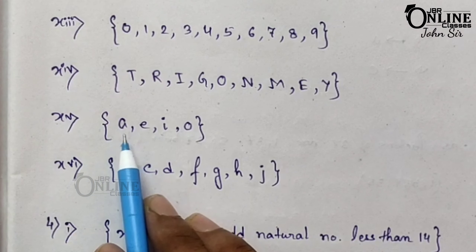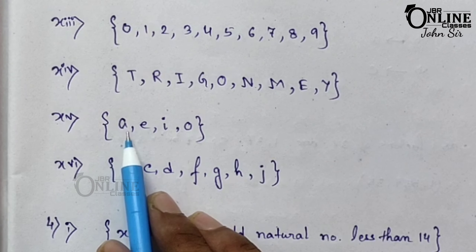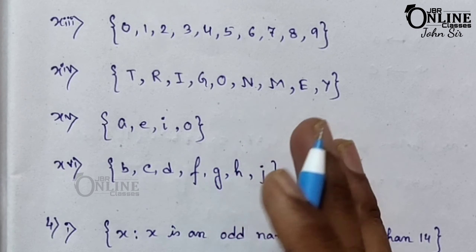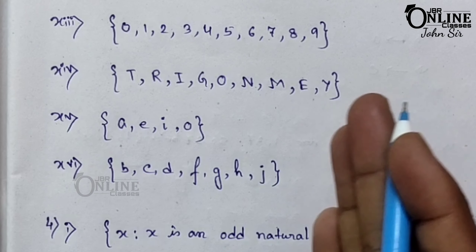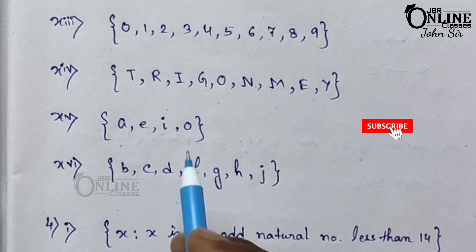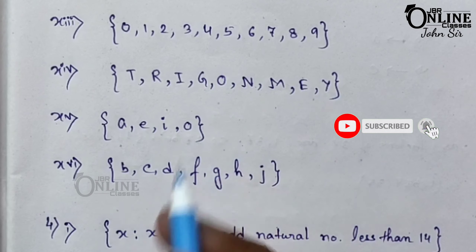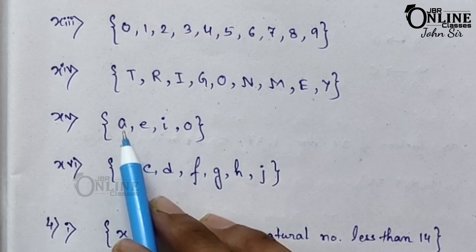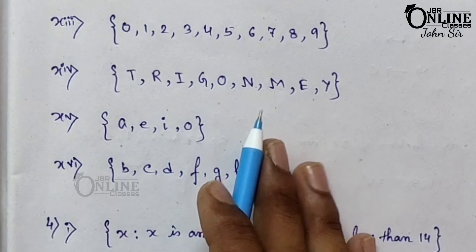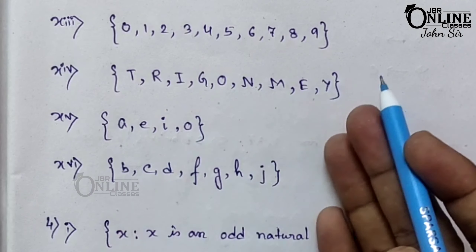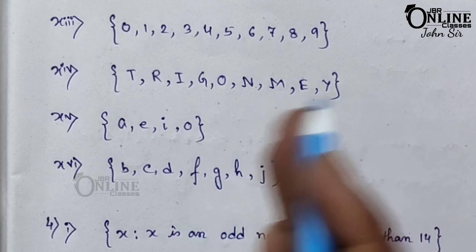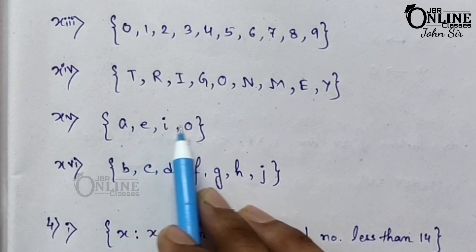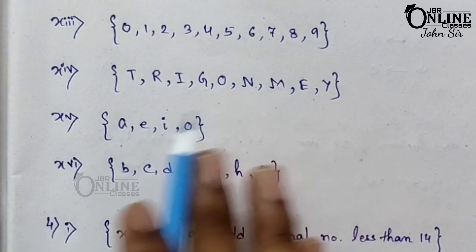XV: the set of all vowels in the English alphabet which precede Q. 'Precede Q' means the alphabets that come before Q. You have to write only the vowels. Vowels are A, E, I, O, U. But U cannot be included because U comes after Q. So the answer is A, E, I, O.